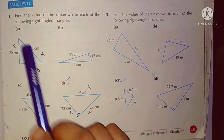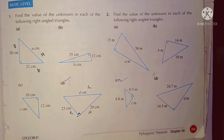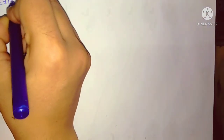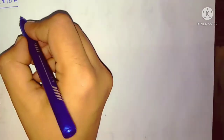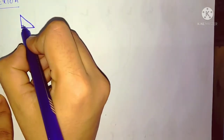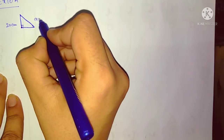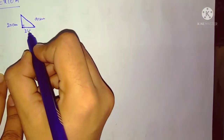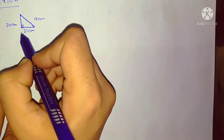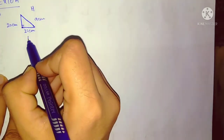This is Exercise 10A. In Part A, the perpendicular is 20 centimeters, the hypotenuse is 'a', and the base is 21 centimeters. You have to find out the value of the unknown, which is 'a'. In this figure, the 90-degree angle is marked, the perpendicular is 20 cm, hypotenuse is 'a' cm, and the base is 21 cm.